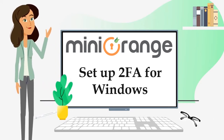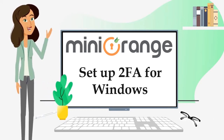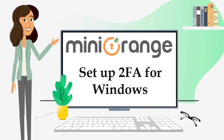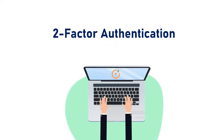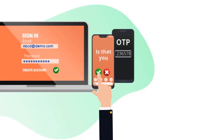In this video I will help you set up different two-factor authentication methods for Windows using Mini Orange Dashboard. Two-factor authentication is a two-step verification security process in which a user has to present username and password along with other factors like smartphone, security token, or OTP, to gain access to an account or a computer system.